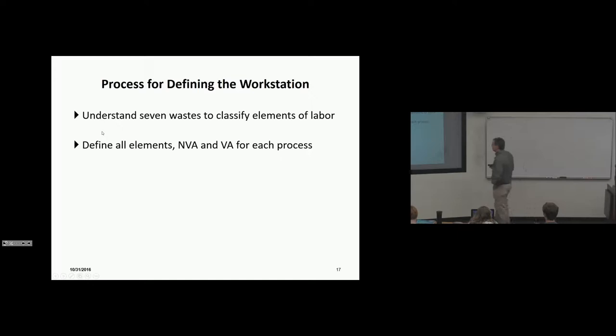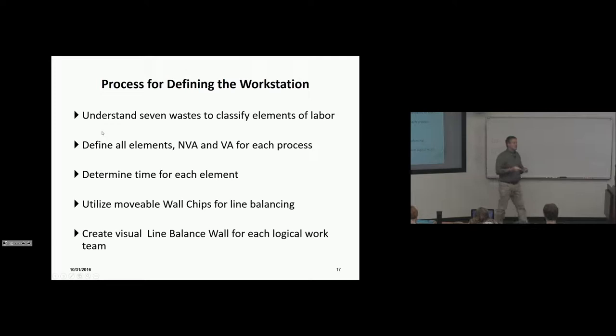We need to understand the seven wastes so we can classify labor. Define all elements of non-value added and value added for each process. This is critically important when you look at the process for doing this and how we improve. Determine time for each element. Utilize movable wall chips for line balancing, and we'll talk about what that is. And create visual line balance wall for each logical work team.